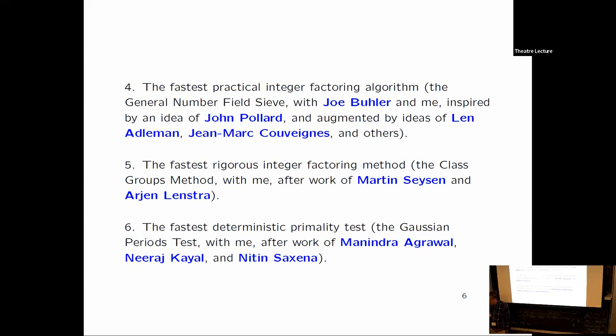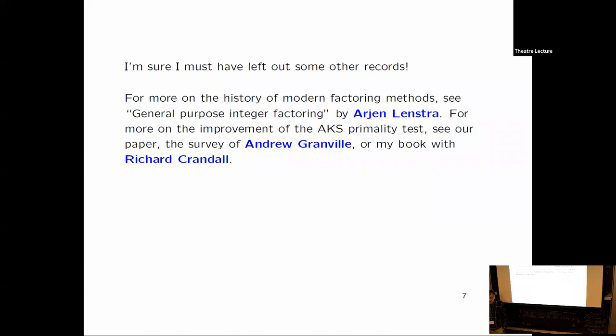The fastest rigorous factoring method is the class groups method for Hendrik and me, after work of Plotkin Seysen and the period of Maurer. The fastest deterministic primality test, inspired by work of Agrawal Kayal and Saxena, me and Hendrik. Not enough records. Maybe there are other records. Those are the six that jumped to my mind. Maybe there are others.